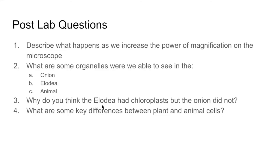Why did the Elodea, a green plant, have chloroplasts, but the onion, which is also part of a plant, did not? Think about what chloroplasts do — they take in sunlight and process it into carbohydrates during photosynthesis. The green leaves of a plant are exposed to the sun and therefore can do photosynthesis. But onion leaves are specialized to store starch and are underground. Since they do not come in contact with sunlight, they're not doing any photosynthesis, so they do not need chloroplasts.